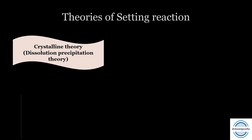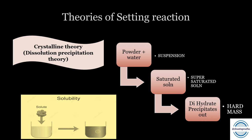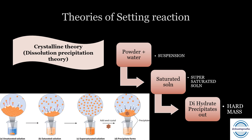The dissolution-precipitation theory is based on the difference in solubility of hemihydrate and dihydrate. The solubility of hemihydrate is 0.9 while that of dihydrate is 0.2. When powder is mixed with water it forms a suspension; as more powder particles mix, a saturated and then a super-saturated solution forms — meaning no more solute particles can be added. At this point, dihydrate crystals start precipitating out, as seen in the picture, and finally form a hard, rigid mass.